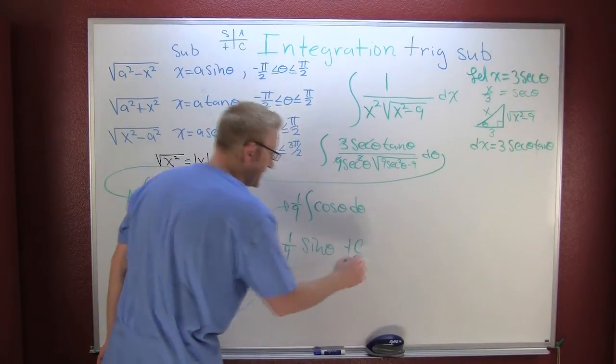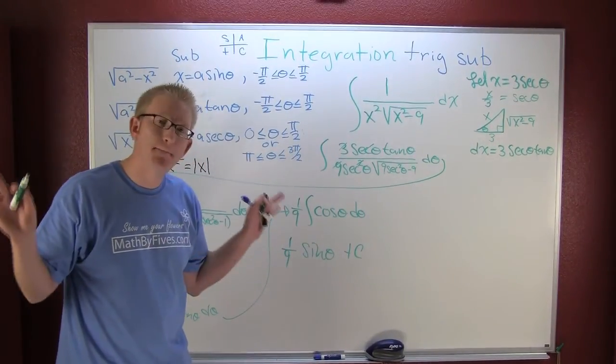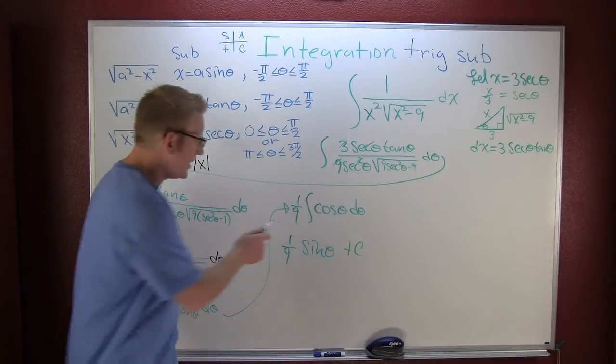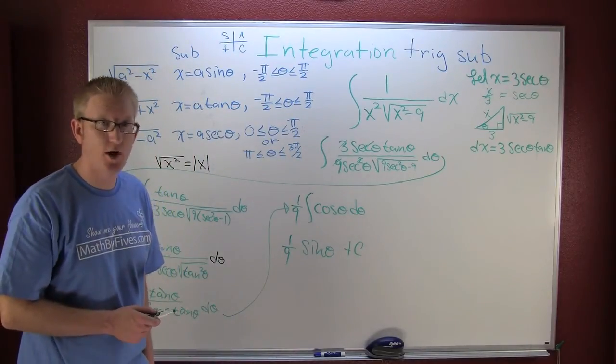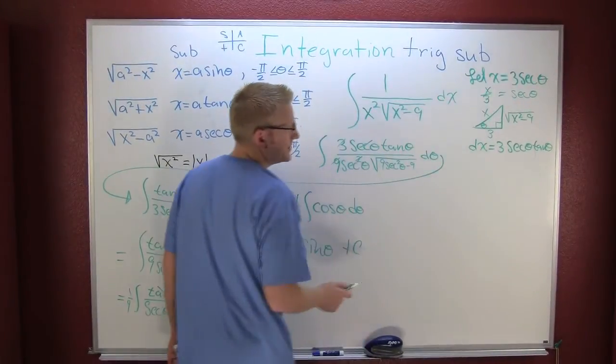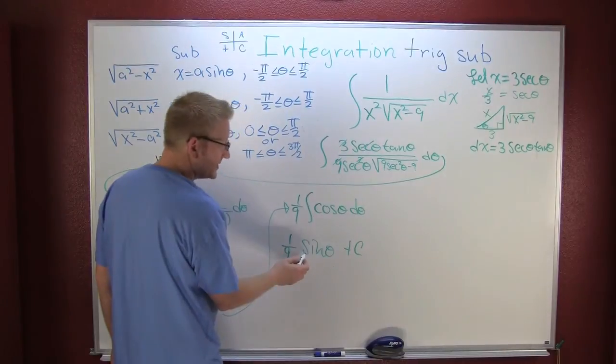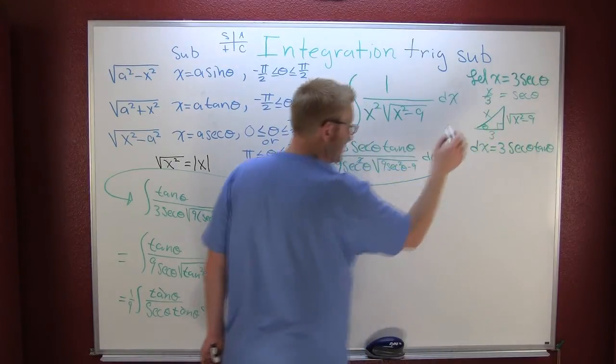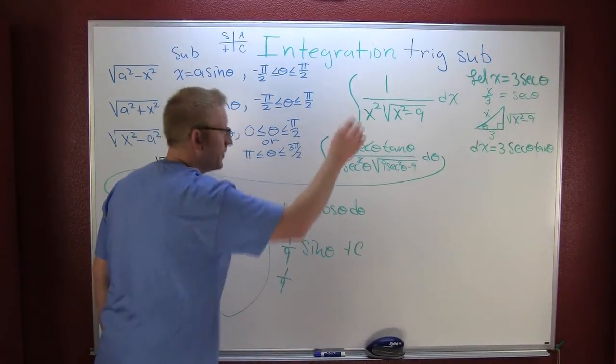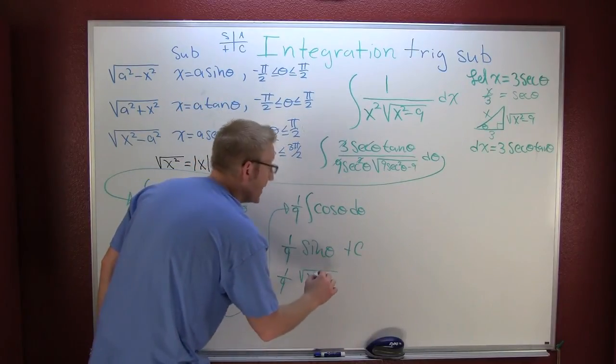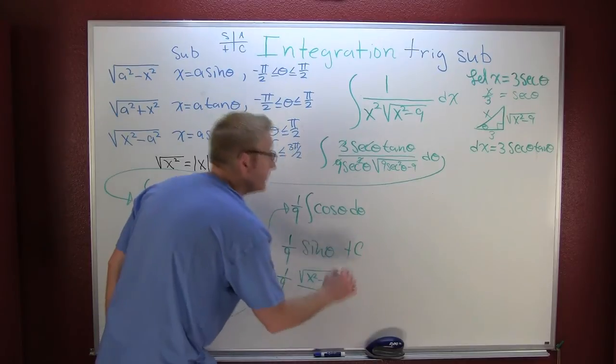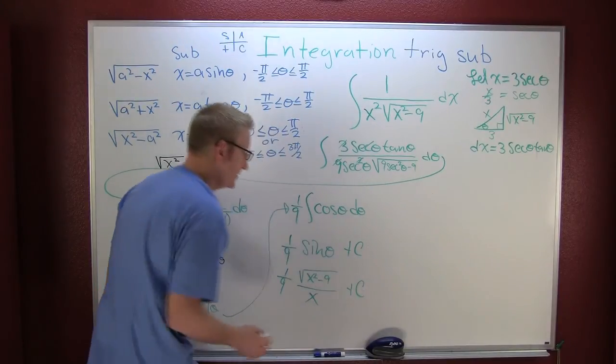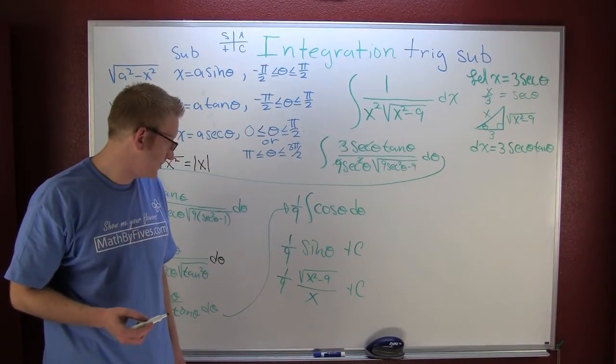But wait, there's more. My original integral involved only x's, here I have a sine theta. I do have my original triangle, the one that we made from the secant. Now we need to read the sine off of that. So the sine is the opposite over the hypotenuse, so this is going to be one ninth, opposite square root x squared minus 9, over hypotenuse x, plus c.